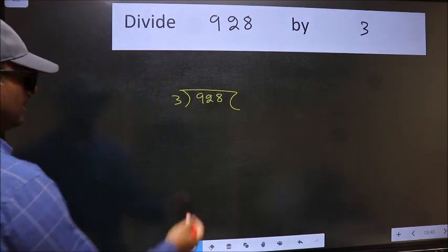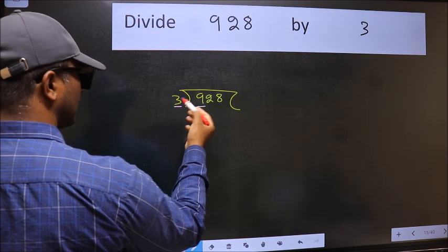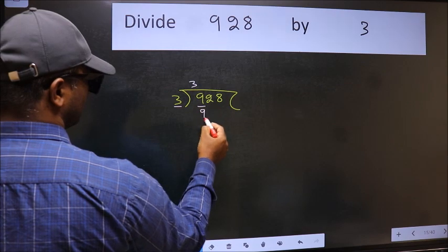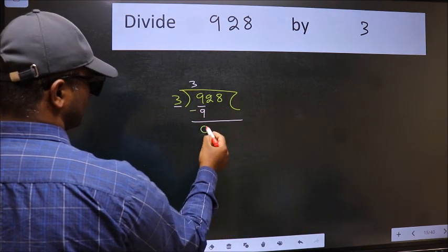Next, here we have 9 and here 3. When do we get 9 in the 3 table? 3 times 3 is 9. Now we should subtract. We get 0.